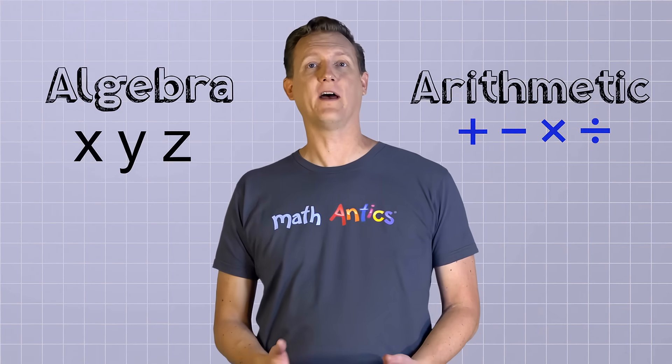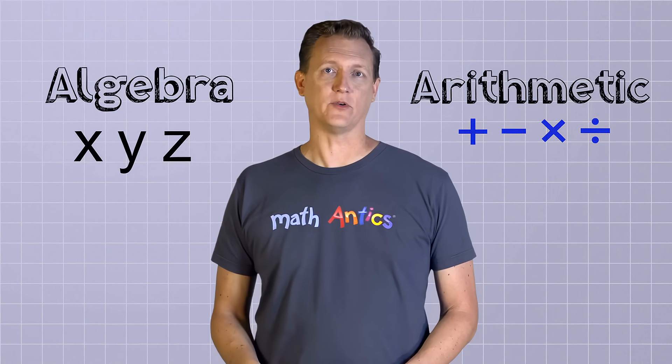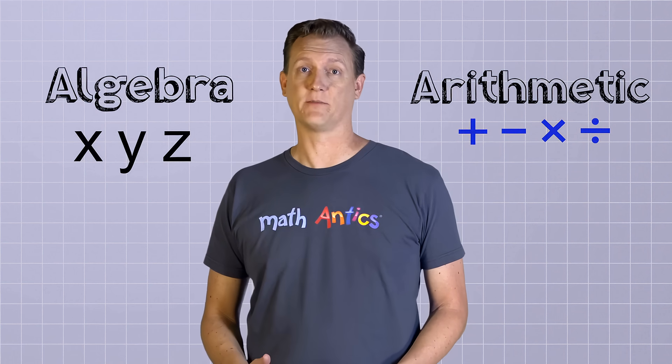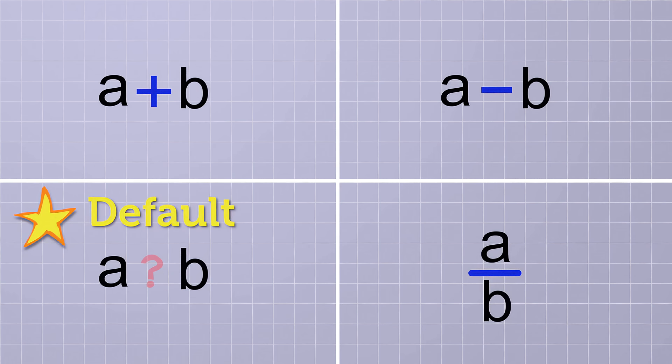Alright, so far we've learned that algebra is a lot like arithmetic, but that it includes unknown values and variables that we can solve for in equations. There's one other really important thing that I want to teach you that will help you understand what's going on in a lot of algebra problems, and it has to do with multiplication. Here are the four basic arithmetic operations: addition, subtraction, multiplication, and division. Although in algebra, you'll usually see division written in fraction form, like this. In arithmetic, all four operations have the same status, but in algebra, multiplication gets some special treatment. In algebra, multiplication is the default operation. That means if no other arithmetic operation is shown between two symbols, then you can just assume that they're being multiplied. The multiplication is implied.